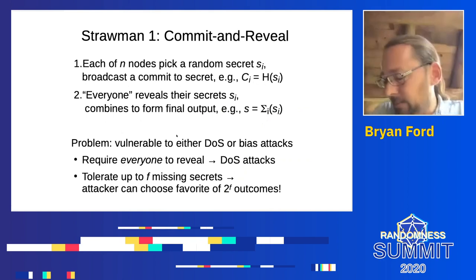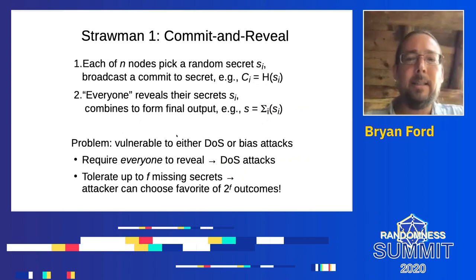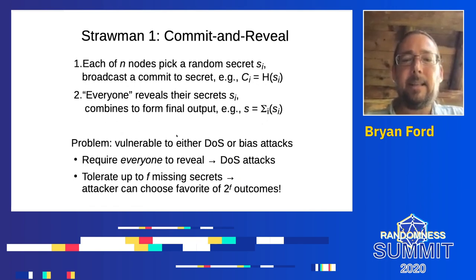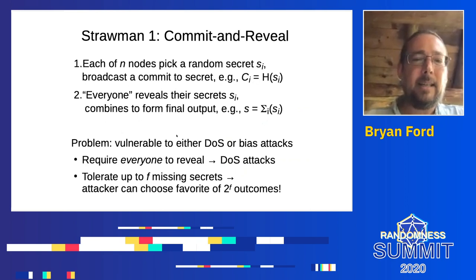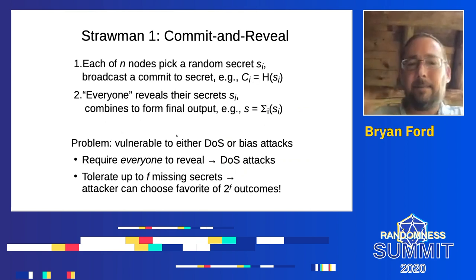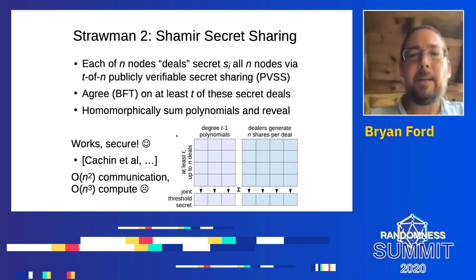This works with thresholds higher than two — it just requires higher-degree polynomials. For a threshold of three, you need a quadratic polynomial and you get exactly the same properties. Now, applying this to our straw man distributed randomness protocol: Shamir secret sharing solves the core problem. Each of the N nodes acts as a dealer and deals their own secrets, then we combine these secrets homomorphically to get a joint polynomial. This ensures that no sub-threshold number of nodes who might drop off can stop the protocol or change the outcome.